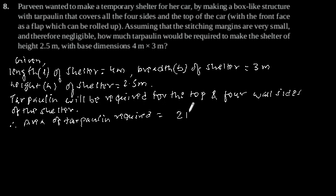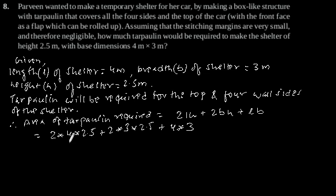2 × length × height + 2 × breadth × height + length × breadth. This is equal to 2 × 4 × 2.5 + 2 × 3 × 2.5 + 4 × 3, which equals 47 square meters.